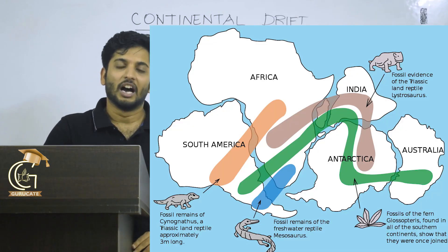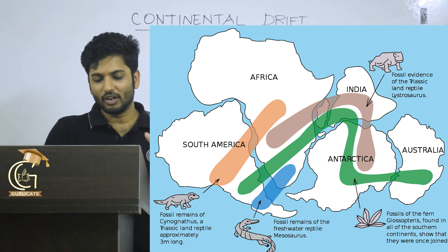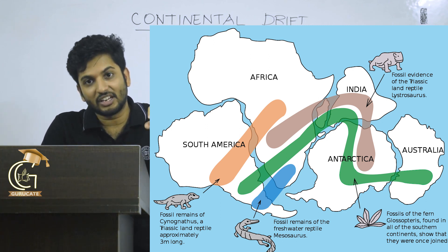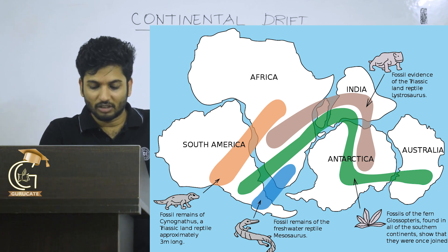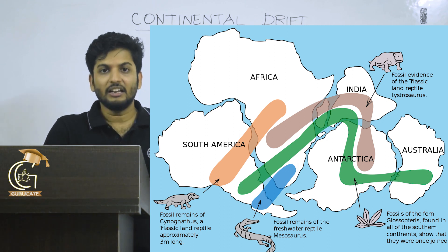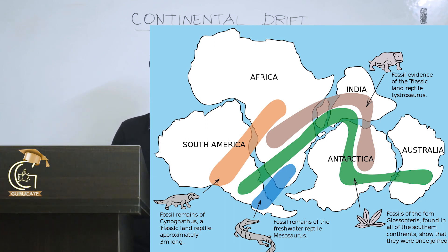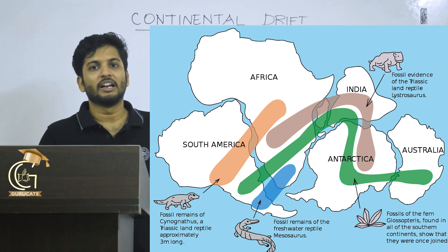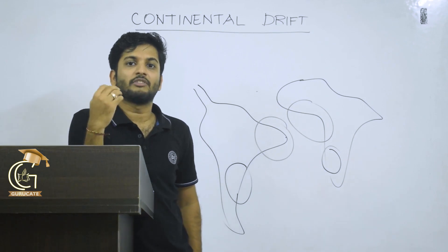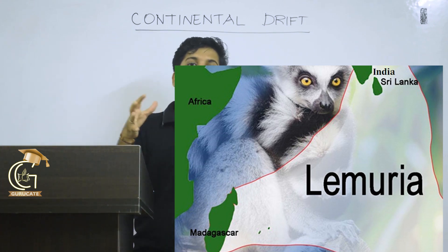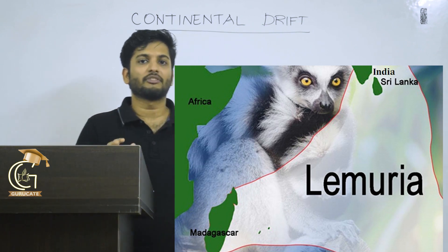The fourth evidence is fossils. Cynognathus is found in South America and Africa. Mesosaurus is found in South America, Africa, and South Asia. Glossopteris is found in South America, Africa, South Asia, and Antarctica. Lemur, an ape-like animal, is found in India, Madagascar, and South Africa. Is it possible for these organisms to cross vast oceans and be present at the other place at the same time? Very difficult. This was put forward as evidence for continental drift. The Lemuria land had Lemurs — India, Madagascar, and South Africa were fused together having this particular fauna.